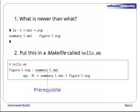The target's prerequisites, the things it depends on, are listed to the right of the colon. In our case, figure1.svg only has one prerequisite, summary1.dat. The second line of the rule is its action.